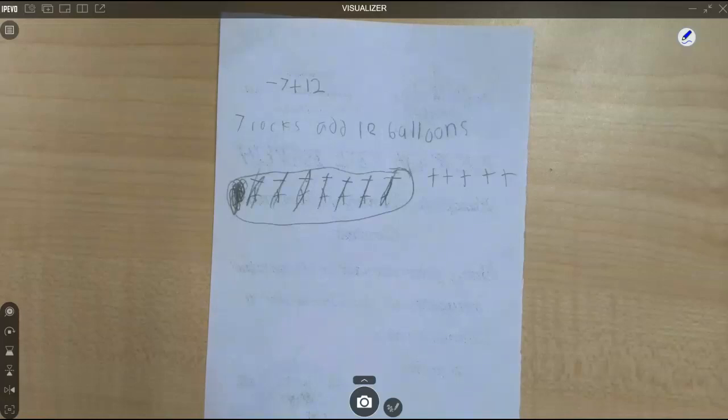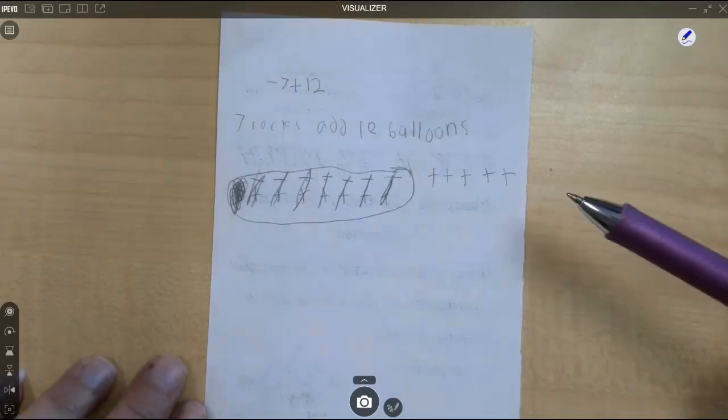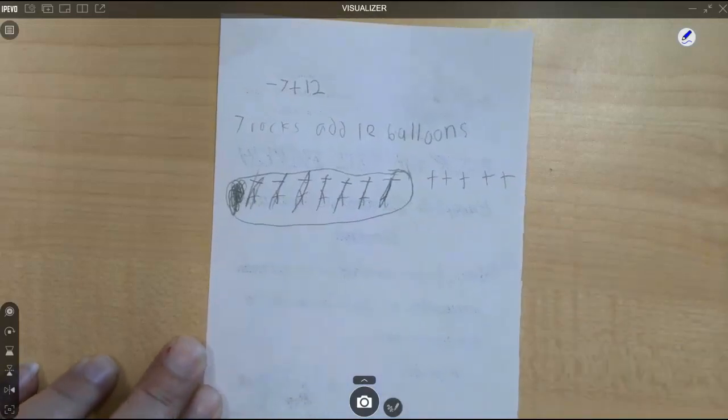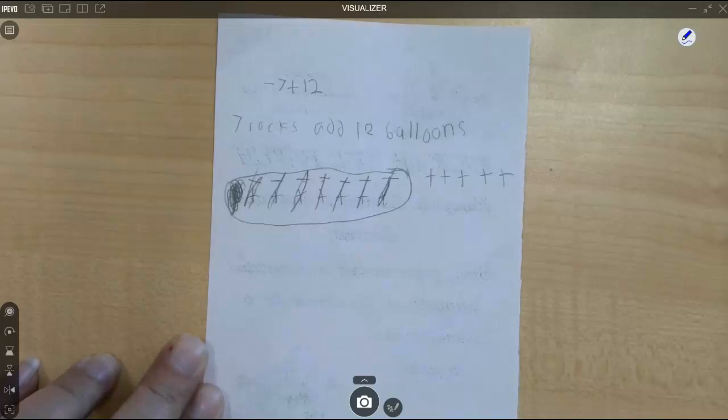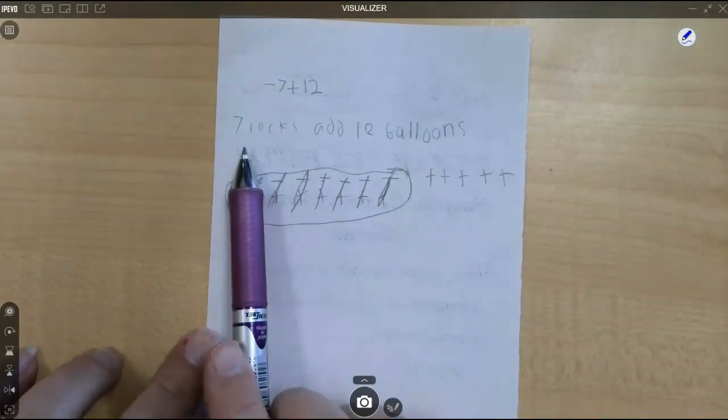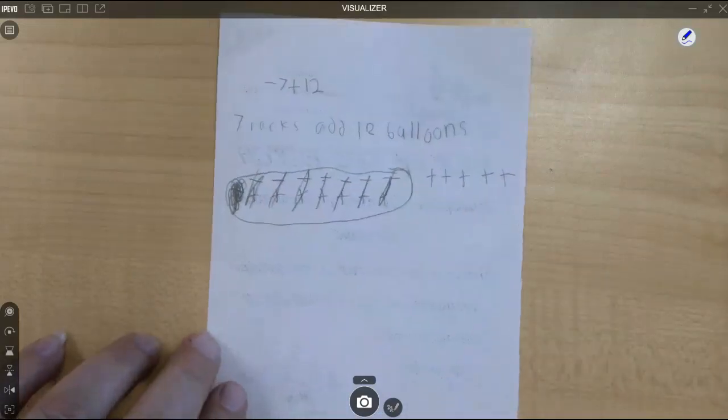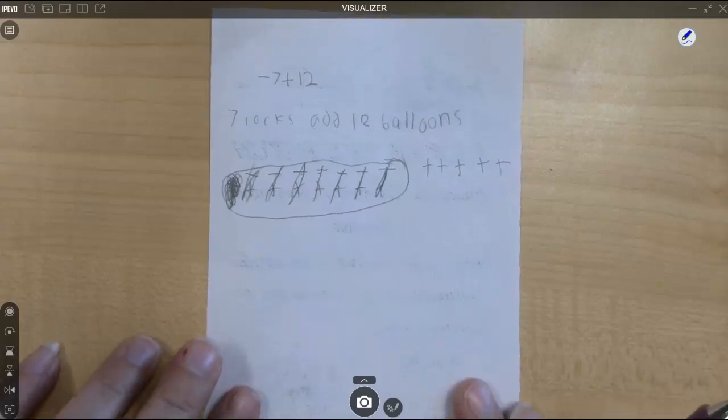I can see the zero pairs. They circled them. We can see exactly where the zero pairs are. What else was done well? They did write the original problem. And they also wrote it in a sentence as well. Seven rocks, add 12 balloons. I love the model. It's a great model.